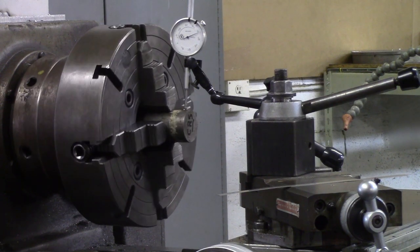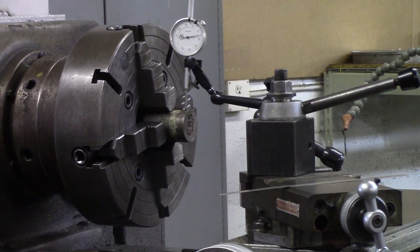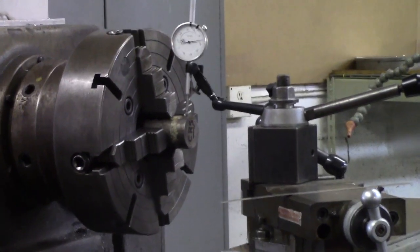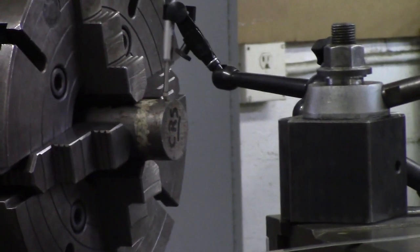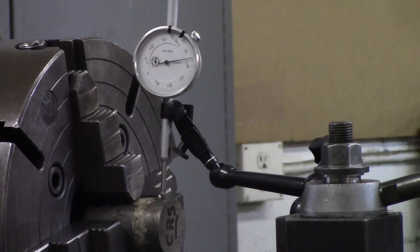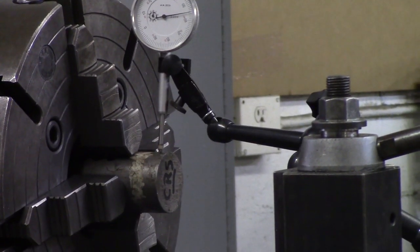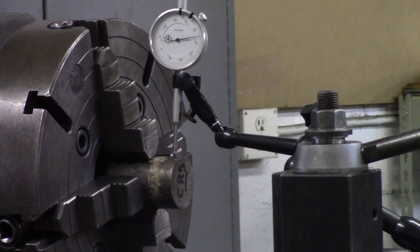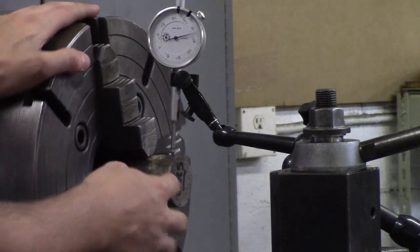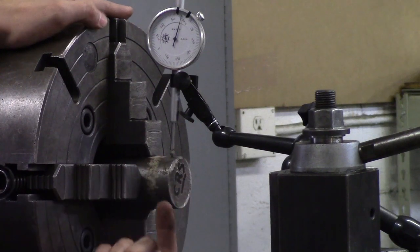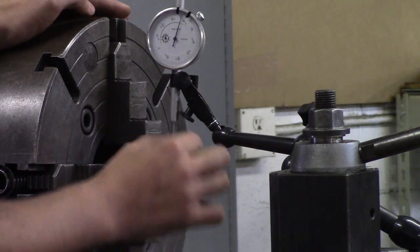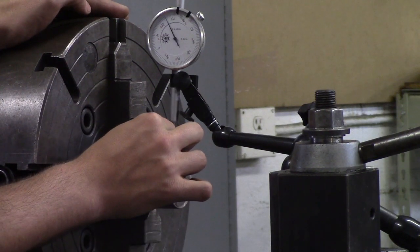Now when it comes to a four jaw chuck it's a push-pull relationship, so what I would suggest doing is over exaggerating the movements in your head. For instance, if it's too far this way you can take your travel indicator and push up. Well if it's pushing your travel indicator up that means that this jaw needs to be pushed down.